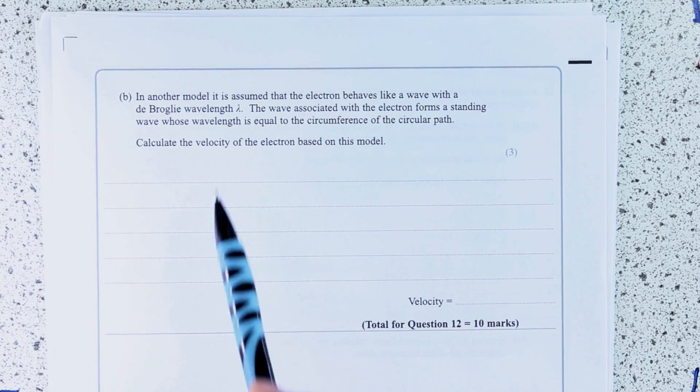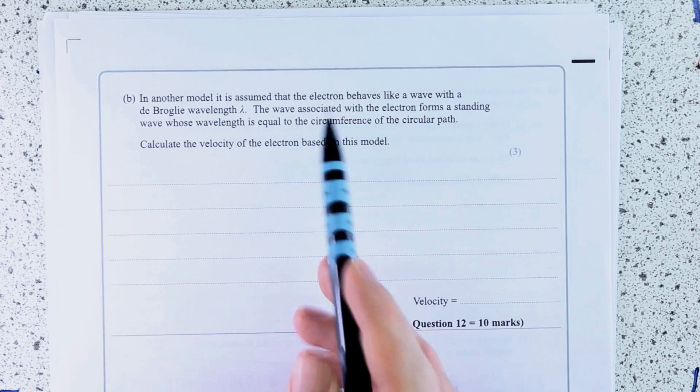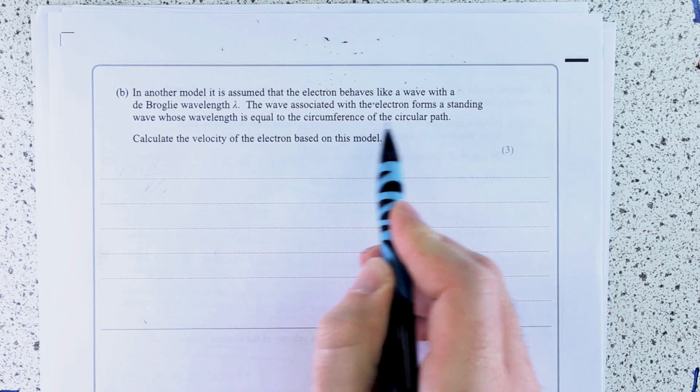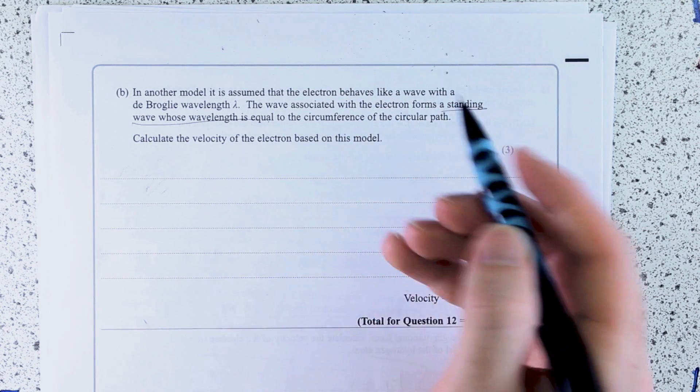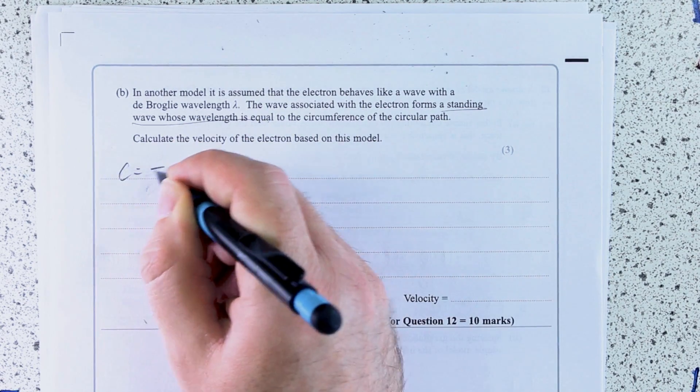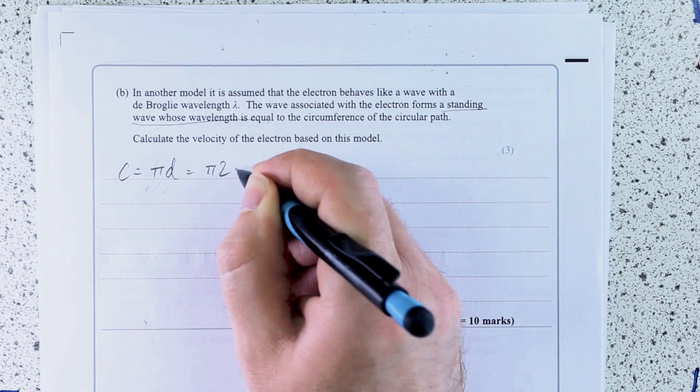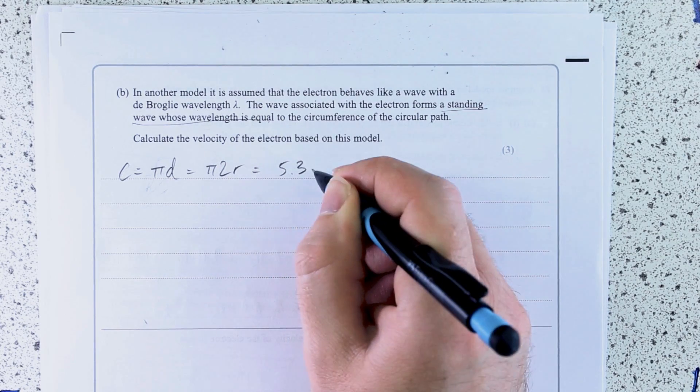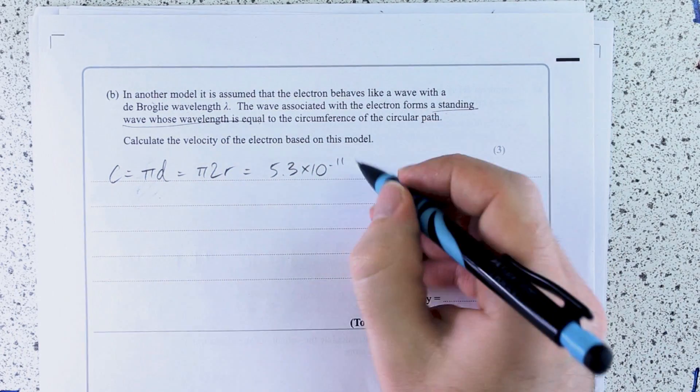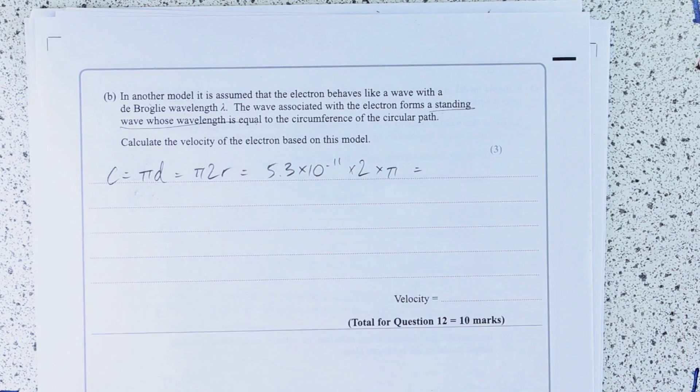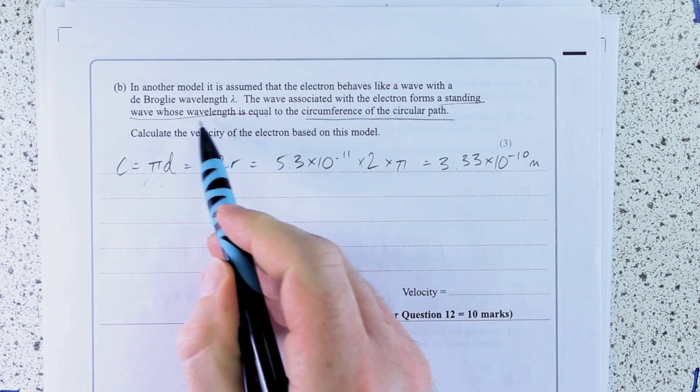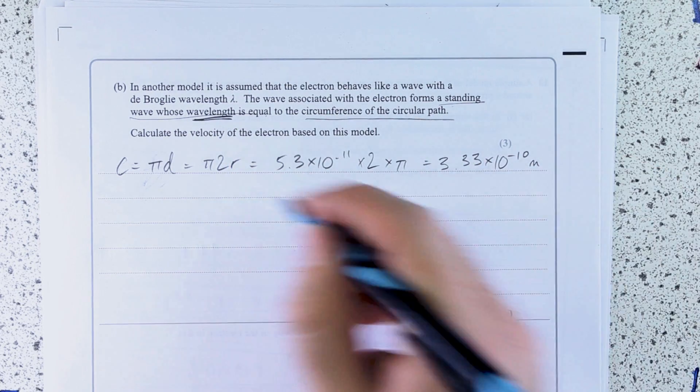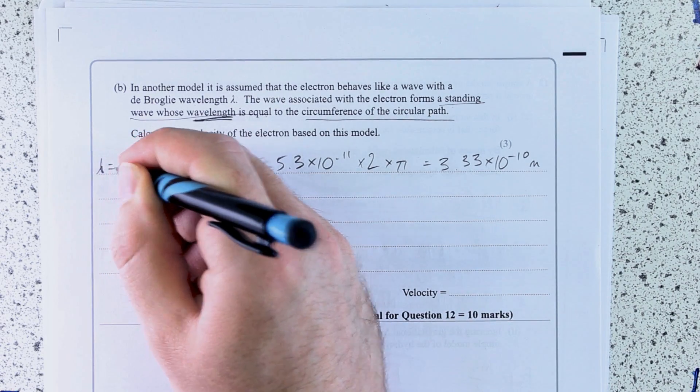In another model, it's assumed that the electron behaves like a wave with a de Broglie wavelength of lambda. So let's get our de Broglie wavelength ready. We're told it's something to do with a standing wave whose wavelength is equal to the circumference of the circular path. And if we know the radius of the circular path, we know that the circumference is pi d or pi 2r. So that's 5.3 times 10 to the minus 11 times 2 times pi. That's the circumference of the circular path, and we're told that is the wavelength. So lambda equals this.